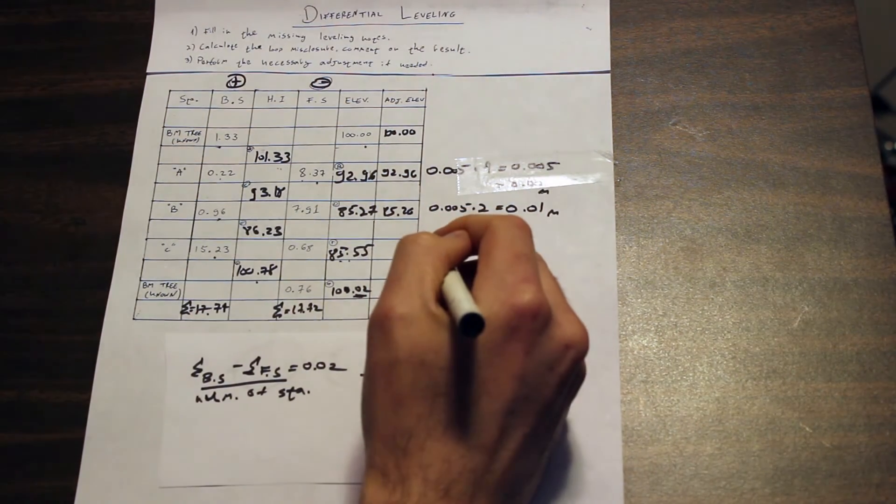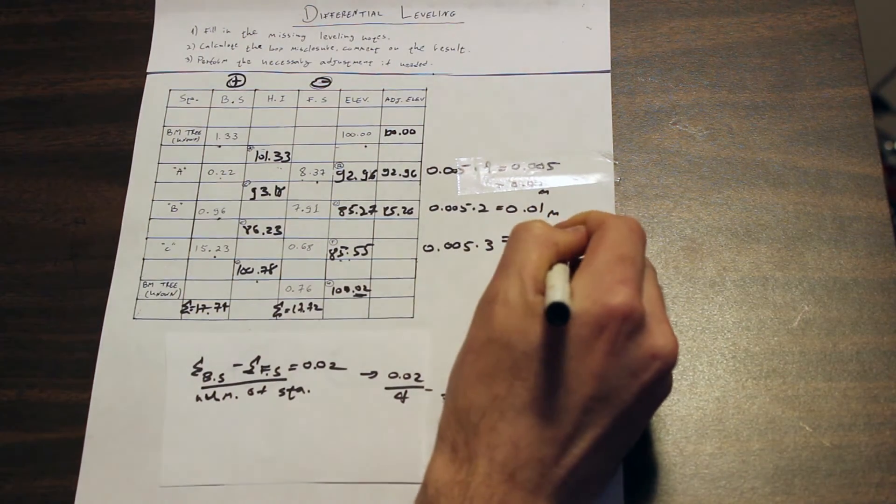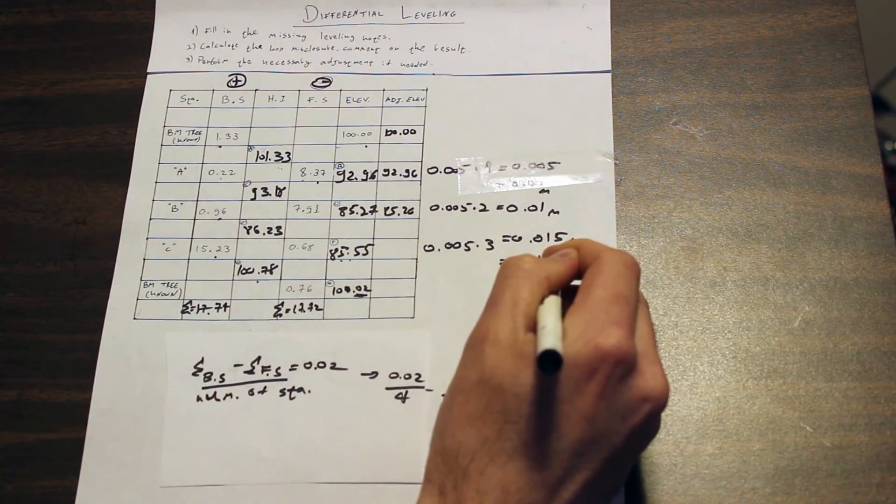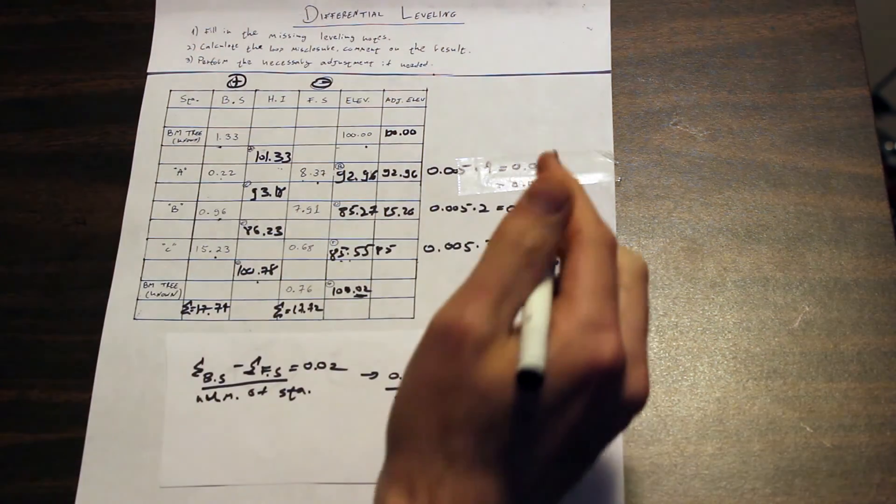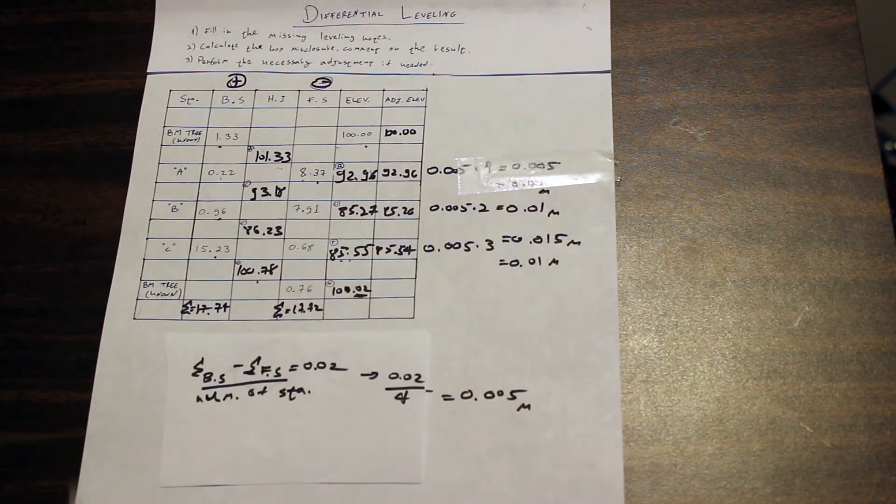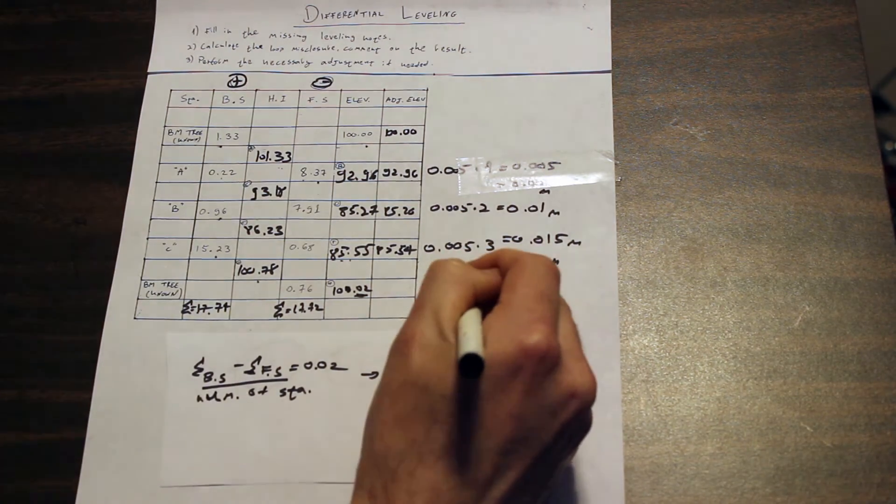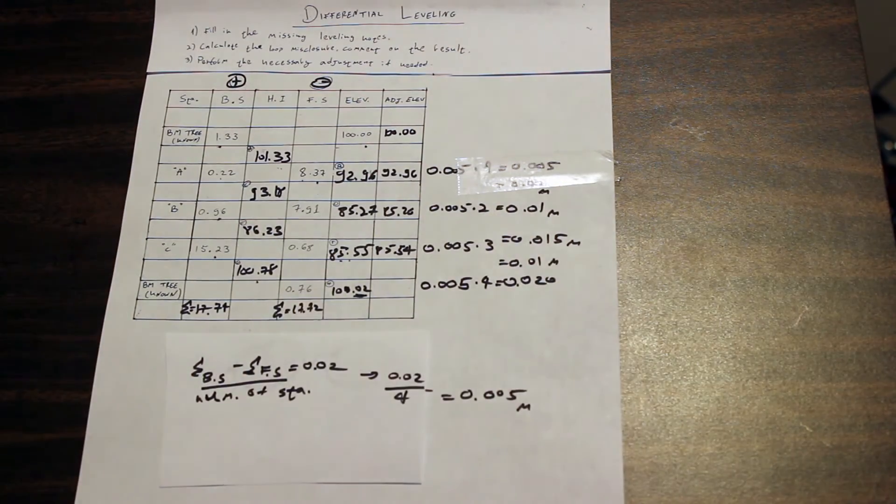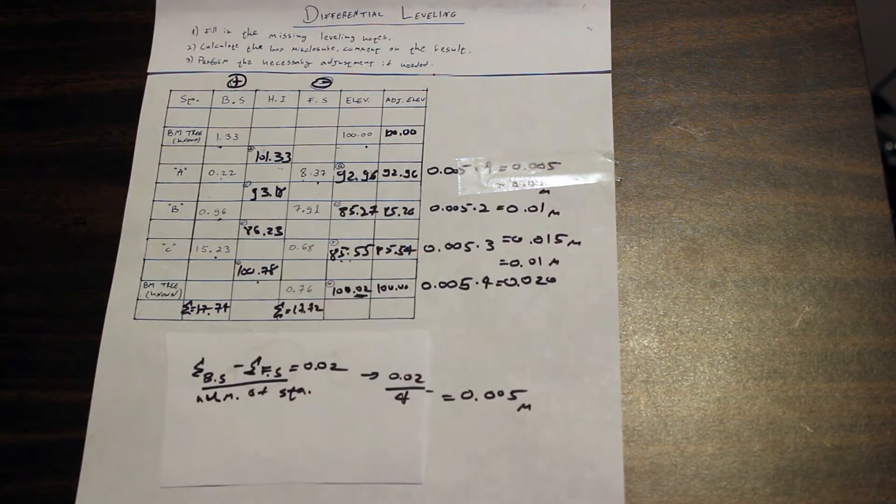Moving on to point C: 0.005 times 3 equals 0.015 meters. Two significant digits would give us 0.01 again, and again we are deducting 0.01, so we get 85.54 for this. And our final adjustment: 0.05 times 4 would give us 0.02, which will basically give us 100, and that's what we want.